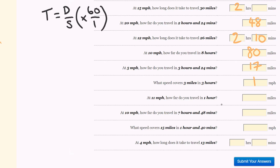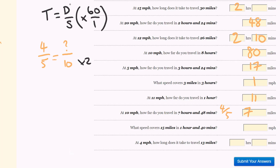What speed covers 3 miles in 3 hours? That's going to be 1 mile per hour. At 11 miles per hour, how far do you travel in 1 hour? That'd be 11 miles. At 10 miles per hour, how far do you travel in 7 hours and 48 minutes? In the first 7 hours at 10 miles per hour you travel 70 miles. For the extra 48 minutes: 12 goes into 48 four times and into 60 five times, so that's 4 fifths. 4 fifths equals distance over speed of 10 — 5 times 2 equals 10, 4 times 2 is 8. Add 8 to 70, the answer is 78 miles.